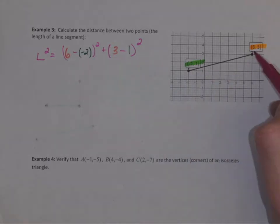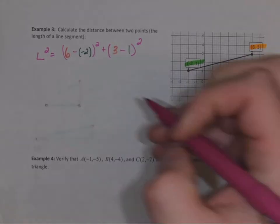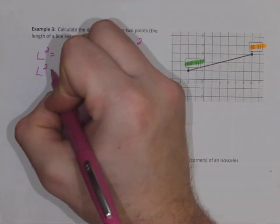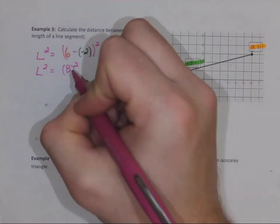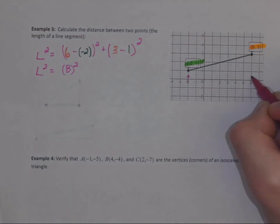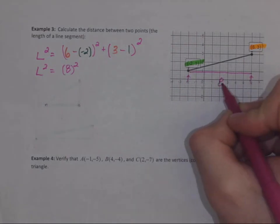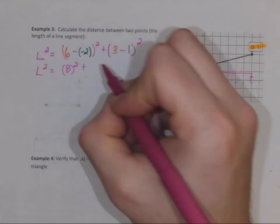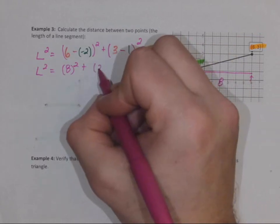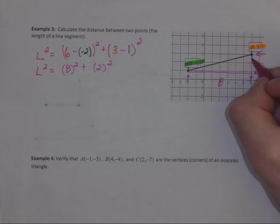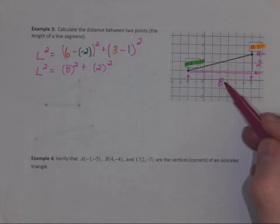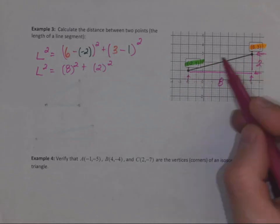Six minus negative two is eight. That tells us from here to here is eight. And then three take away one is two, that tells us from here to there is two. Two squared plus eight squared is going to equal c squared.